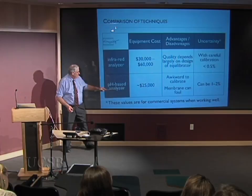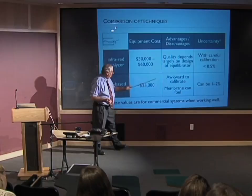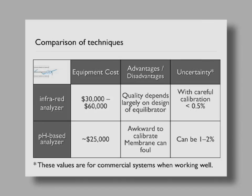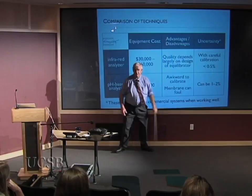pH-based analyzers tend to be cheaper. The SAMI from Sunburst Systems is one design. They're awkward to calibrate — essentially calibrated by however they calibrated it in Montana, and you take that on trust. If bacteria grow on the membrane, the CO2 you're measuring may be substantially modified. If the membrane fouls, it's no longer working as a good equilibrator. But it can be reasonably good: 1–2% precision.